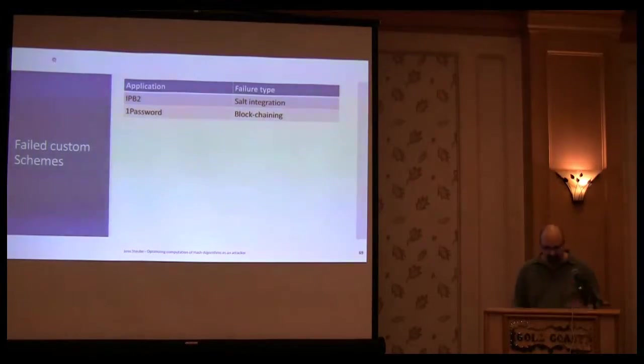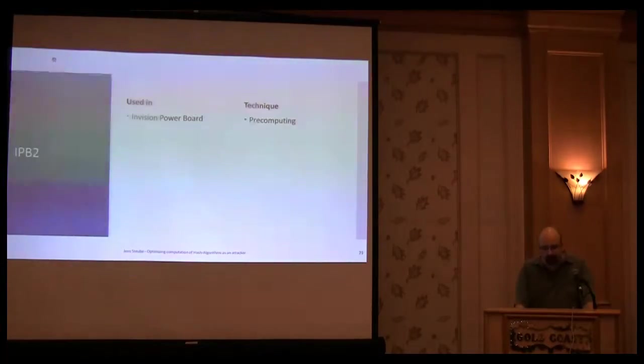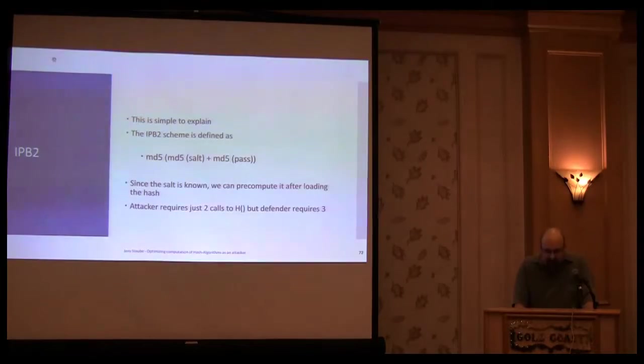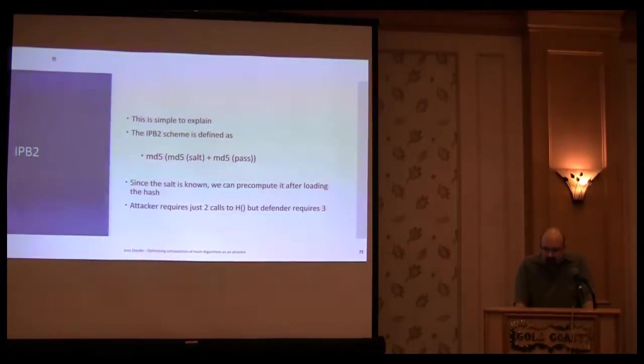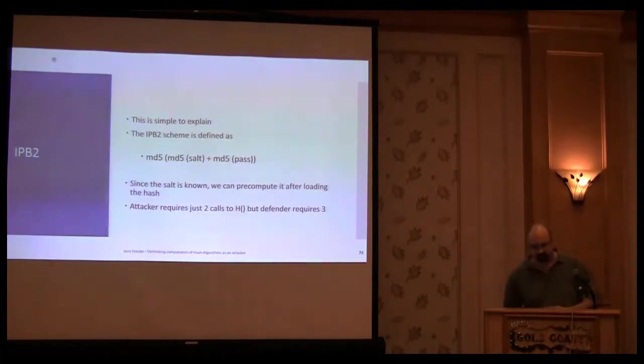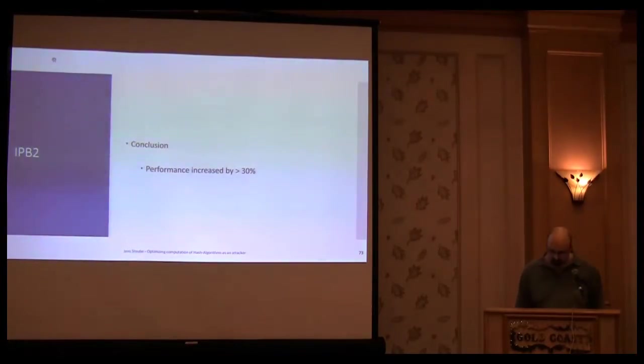Hey, custom algorithms. I wanted to add some more to this. The first one is IPB2. IPB2 is using MD5 in a very strange way. They are hashing with MD5 and the result is the ASCII hex representation, and that one is hashed again. The result is fixed. Since the result is fixed we can pre-compute that part for the entire thing. So instead of doing three MD5 transforms we just need two. We have more than 30 percent savings.